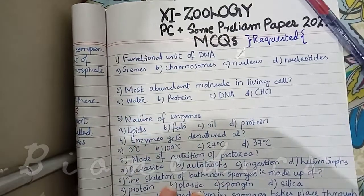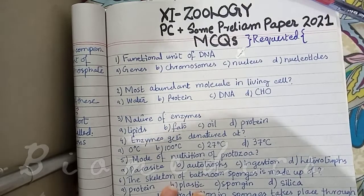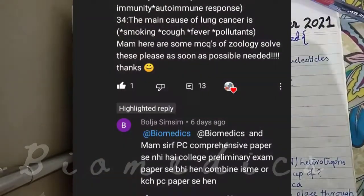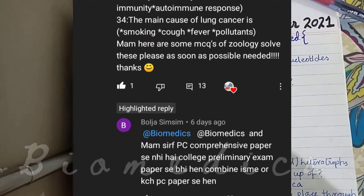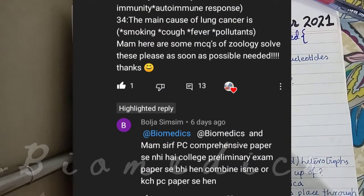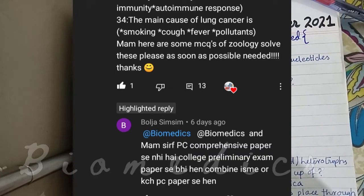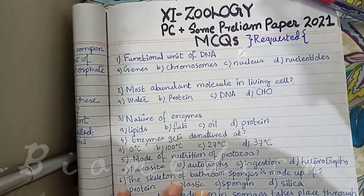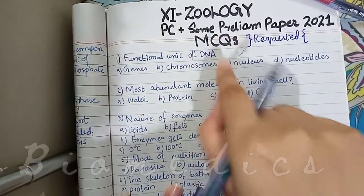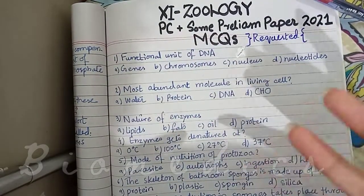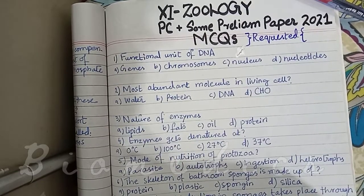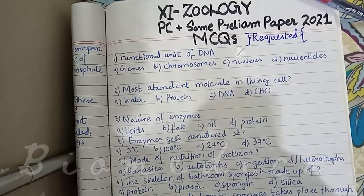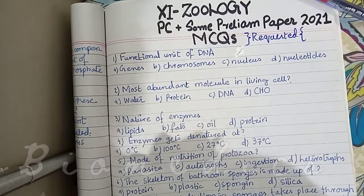Asalaamu alaykum students. I am doing a few questions about first year zoology. They were sending questions, and they were saying that they had a comprehensive paper in PC. I have done a comprehensive paper in PC in 2021, but they said that they had a different paper. So please comment down below so everyone knows which questions we are going to solve.